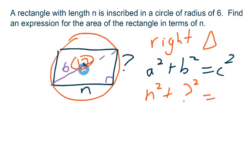Equals the hypotenuse, which is 12. So 12 squared. So then I have n squared plus something squared equals 144.